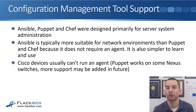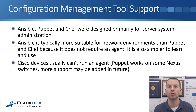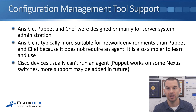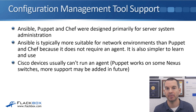Ansible, Puppet, and Chef were not originally designed for managing network devices — they were primarily designed for server system administration, like Linux and Windows servers. Ansible is typically more suitable for network environments than Puppet and Chef because it does not require an agent. For server systems, installing software plugins is easy and common, so it's not a big deal with Puppet and Chef. However, it's not common to install agents on network devices. Because of this, Ansible is generally more suitable for network devices, and it's also simpler to learn and use. For managing network environments, Ansible is the most popular and typically the most suitable.